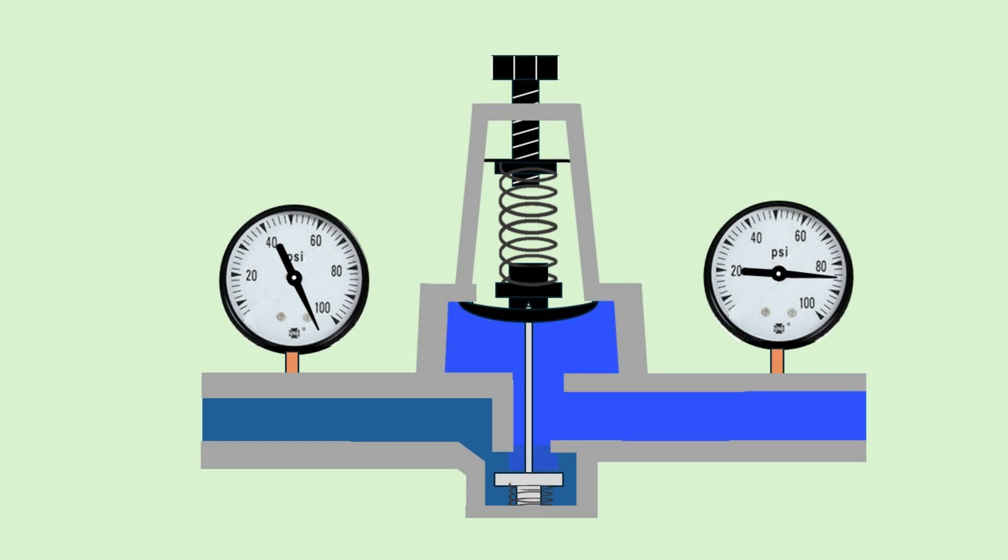When the gap widens, there is a smaller pressure drop, so the outlet pressure increases. When the gap narrows, there's a larger pressure drop and the outlet pressure decreases.